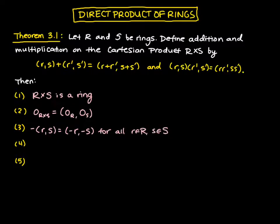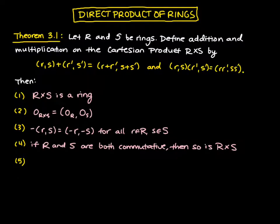And if R and S are both commutative, then so is R times S. So the direct product of commutative rings is itself commutative.